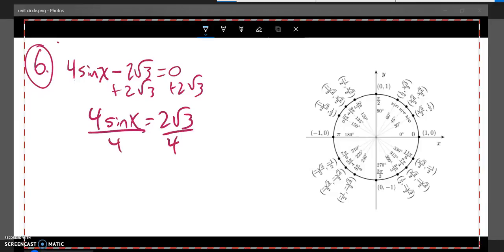Divide everything by 4. And once I have that, I have sine x equals, that divides out to a 2, root 3 over 2.